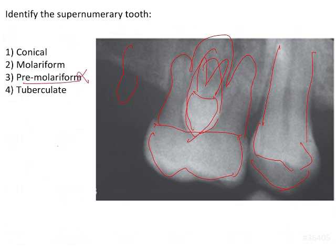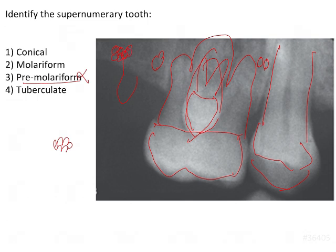Premolariform is not a form of supernumerary tooth. Coming to tuberculate — tuberculate is basically a cluster of teeth-like structures put together. What you would see is probably just a small structure or two structures like this. An odontome, on the other hand, is a cluster of tooth-like structures surrounded by a halo, and radiolucency will also be present — that is how you identify an odontome. Whereas tuberculate is basically just a tooth with a conical or normal sharp projection that has erupted.